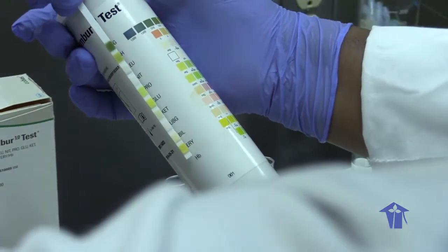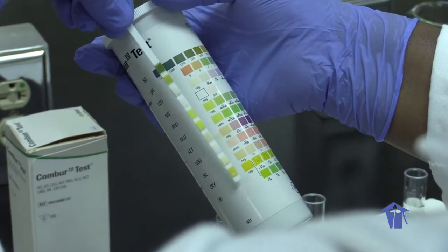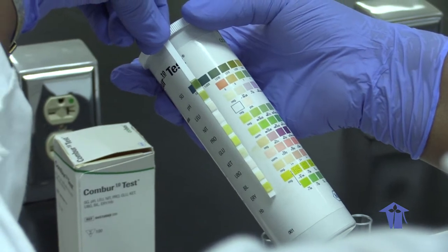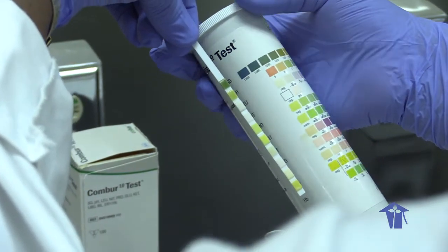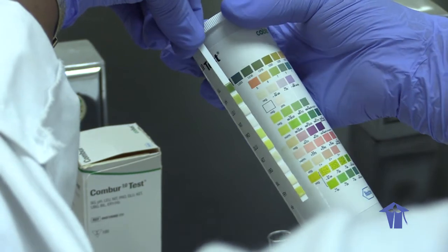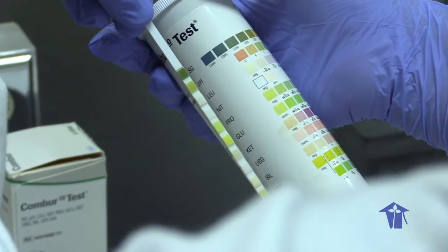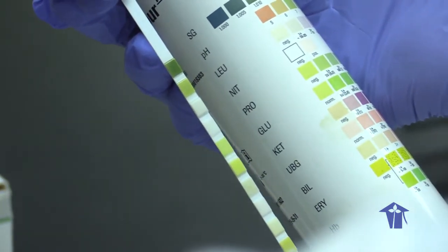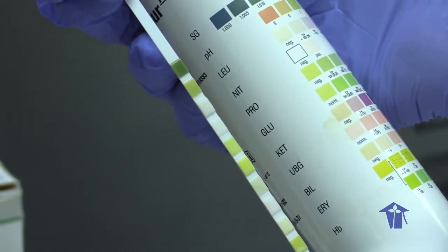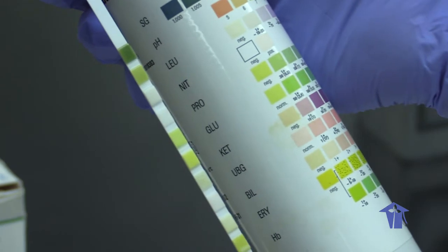So this urine, we can see that the specific gravity, which is your first reading, is 1.010. Your pH is about 8. Leukocytes, negative. Nitrite, negative. Protein, negative. Everything else appears to be negative. So this is a normal urine.